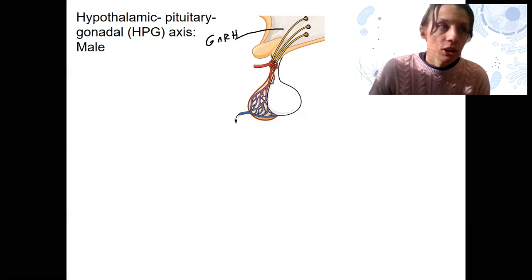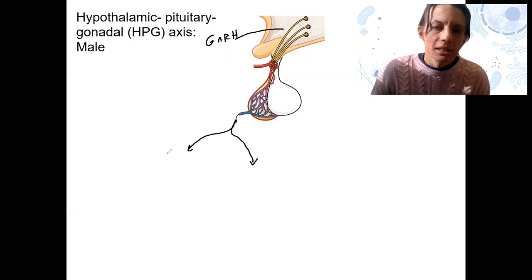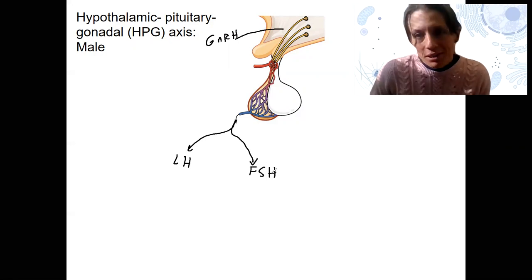And then coming out of the anterior pituitary is going to be two hormones. I'm going to draw them. Might need to extend those arrows. Luteinizing hormone and follicle stimulating hormone. You already know this, right?